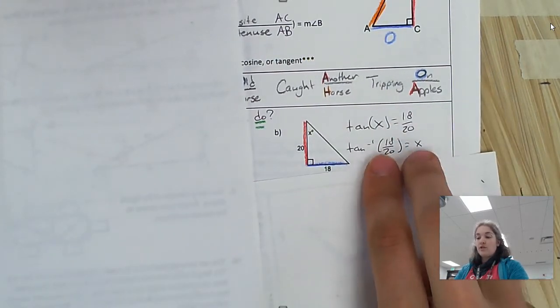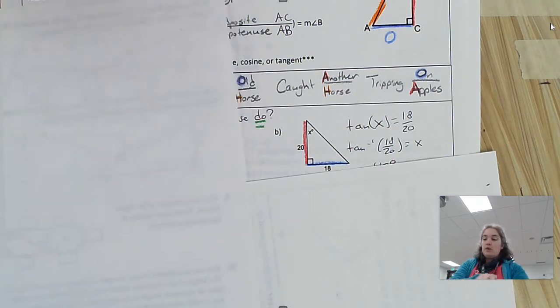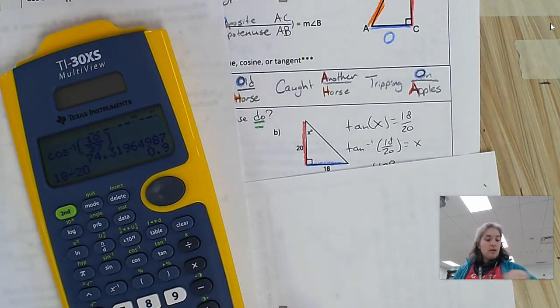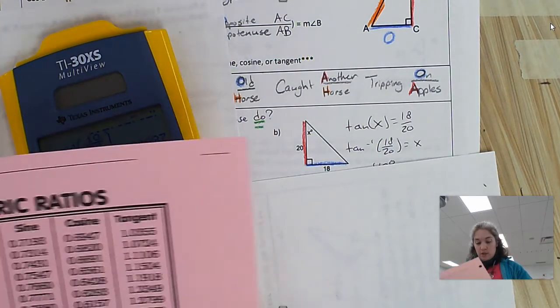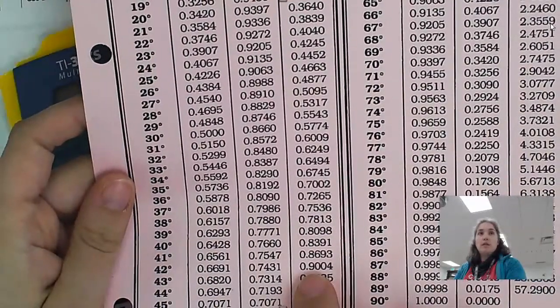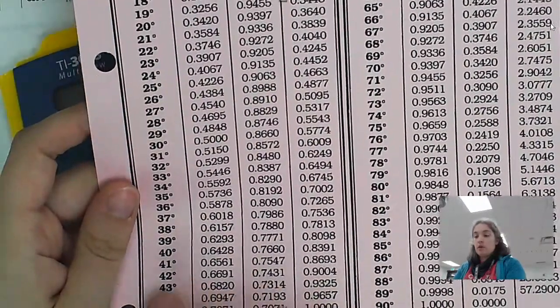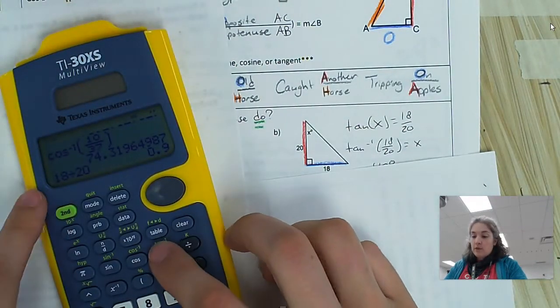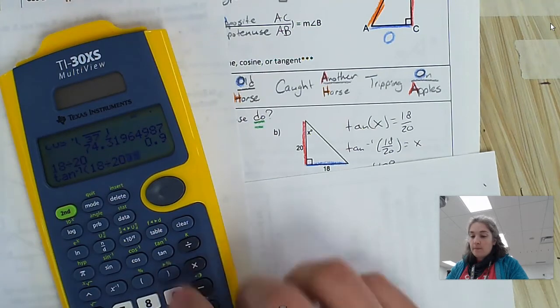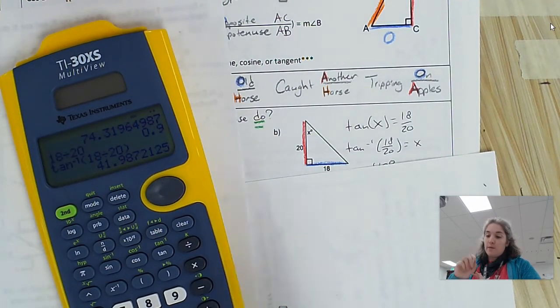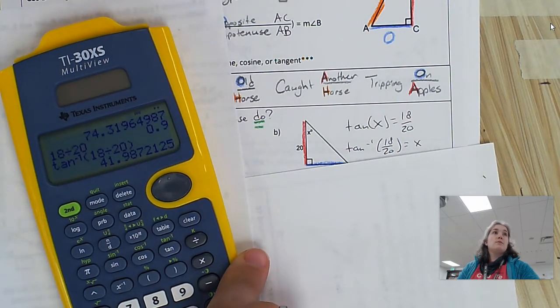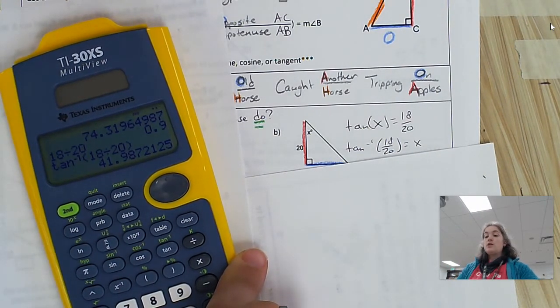So you see that? I just flip-flopped them, and I've got my inverse written there now. So if we have 18 divided by 20, that decimal is 0.9. Well, if I look on here for tangent, 0.9 is going to be about 42 degrees. You see that? 42 degrees. So we know the inverse tangent, 18 divided by 20, should be 41.987. So yeah, it's about 42 degrees. So pretty close, pretty close.